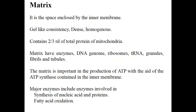After the cristae, we have the matrix — the space enclosed by the inner membrane. The matrix is gel-like in consistency, dense and homogeneous. It contains two-thirds of the total protein of mitochondria. The matrix is important for the production of ATP with the aid of ATP synthase, and contains all enzymes, DNA, ribosomes, and transfer RNA. Major enzymes include those involved in the synthesis of nucleic acids, proteins, and fatty acids.